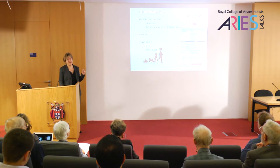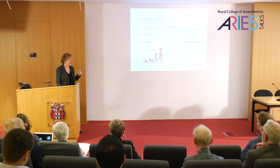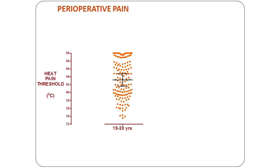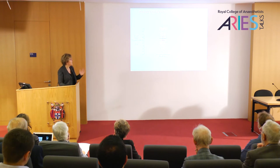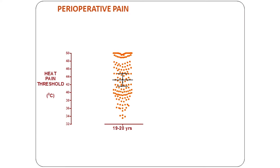Even within a given age range there can be marked individual variability in pain response. These are measures from 150 nineteen to twenty year olds using a very controlled experimental technique — a thermode on the hand changes temperature at a fixed rate and the subject presses the button when it starts to feel painful. The median is about 43 degrees and the 95 percent confidence intervals are quite tight because of such a large sample, but you can see there is huge variability between what one person and the next person feels is painful.